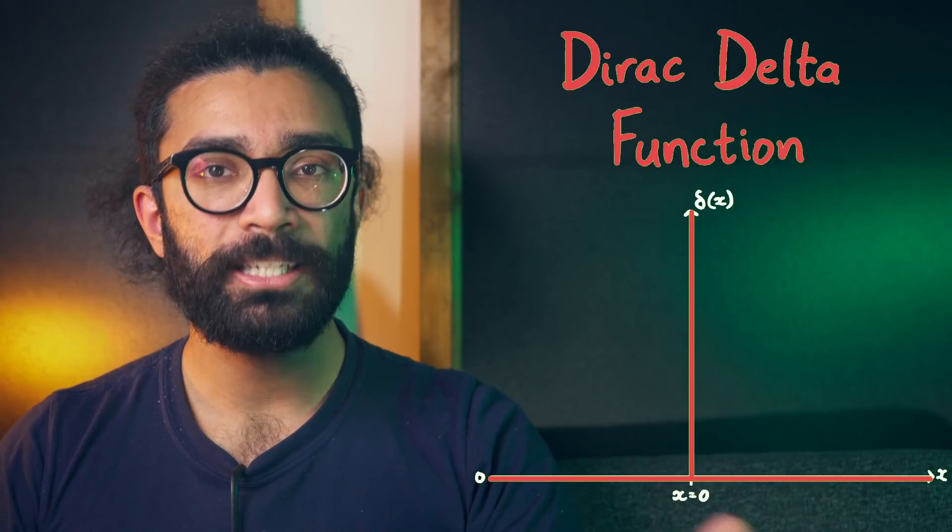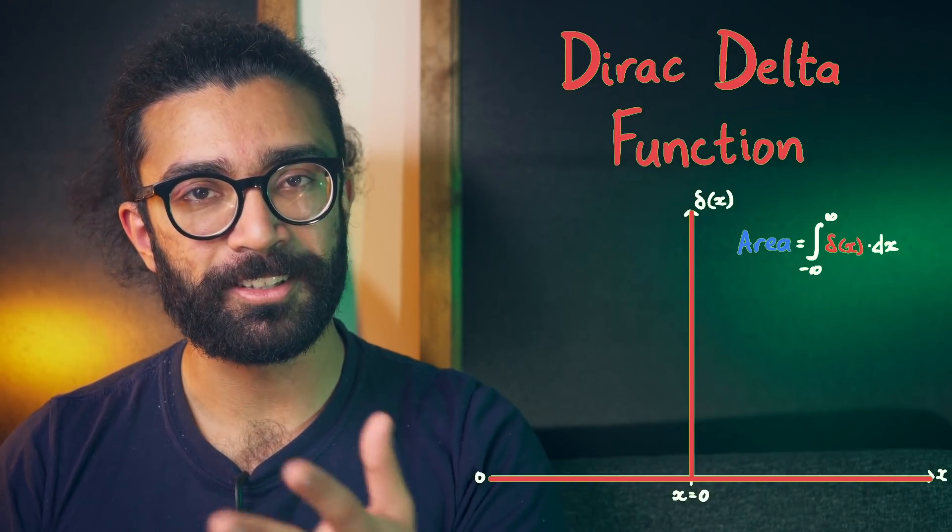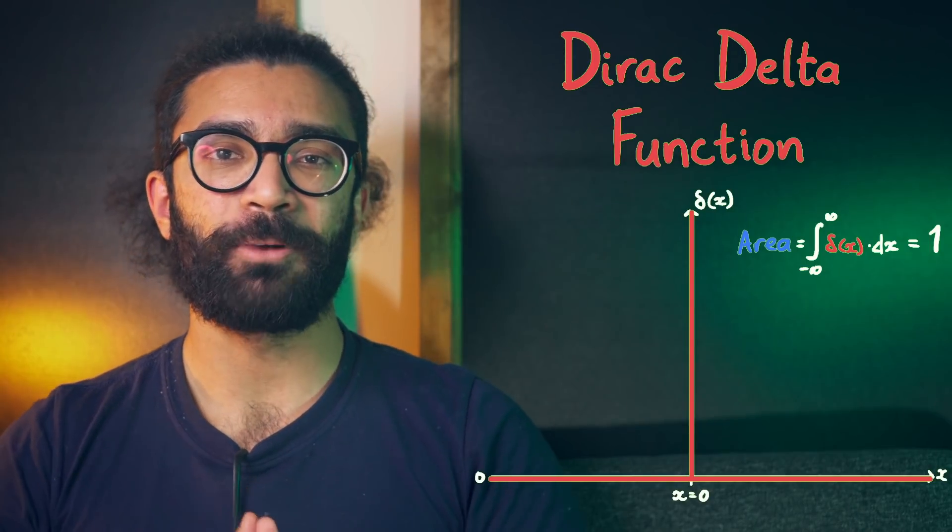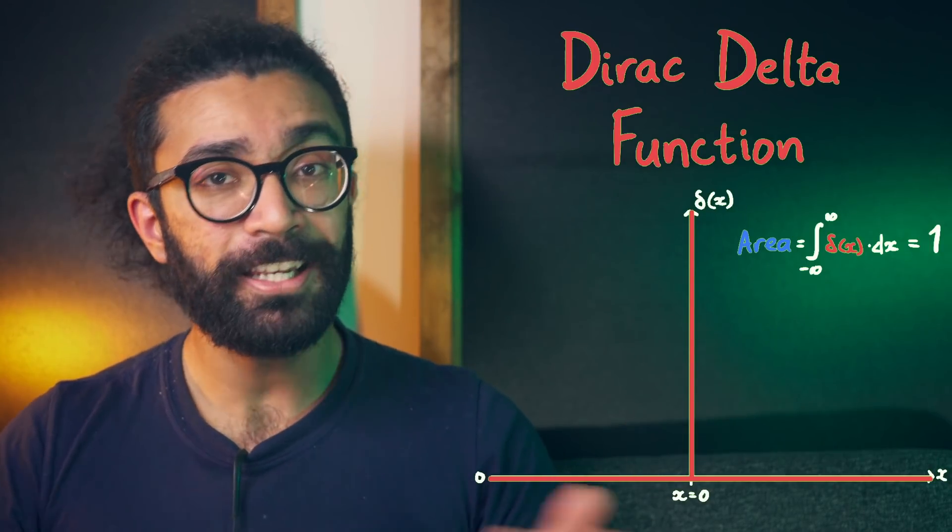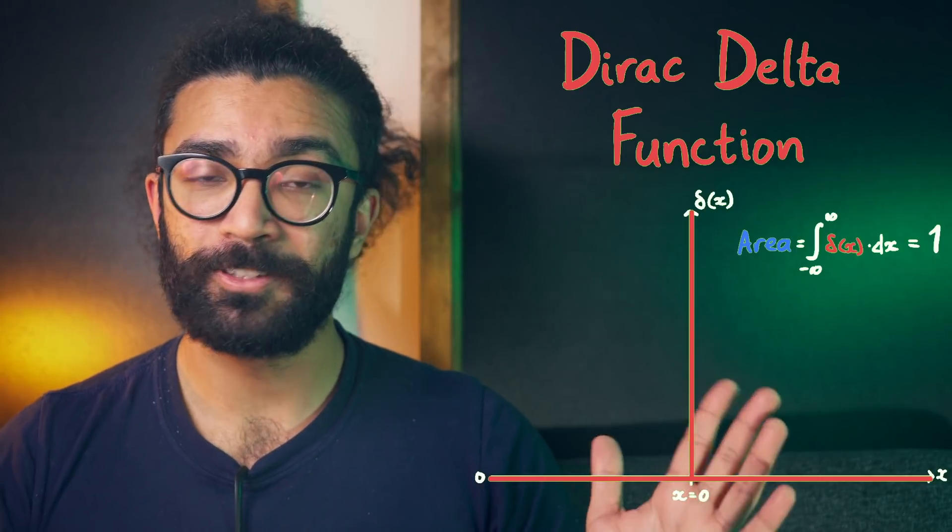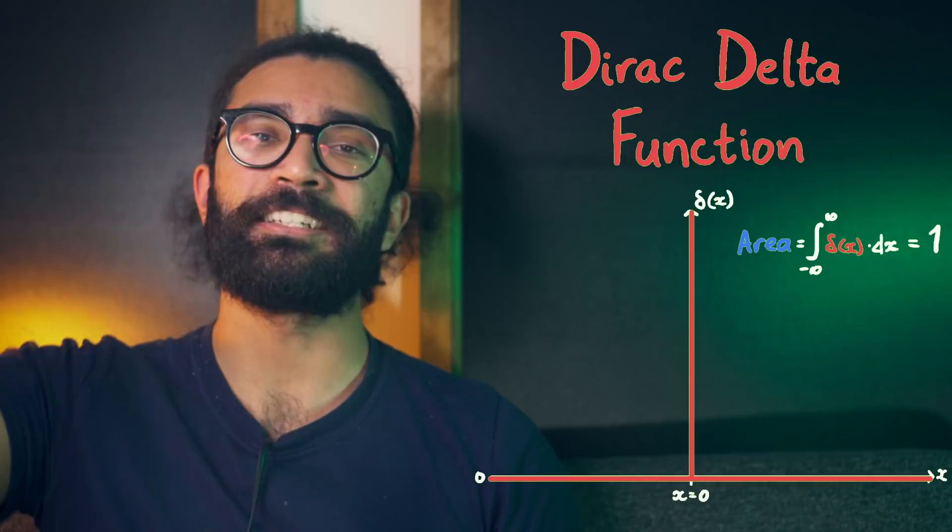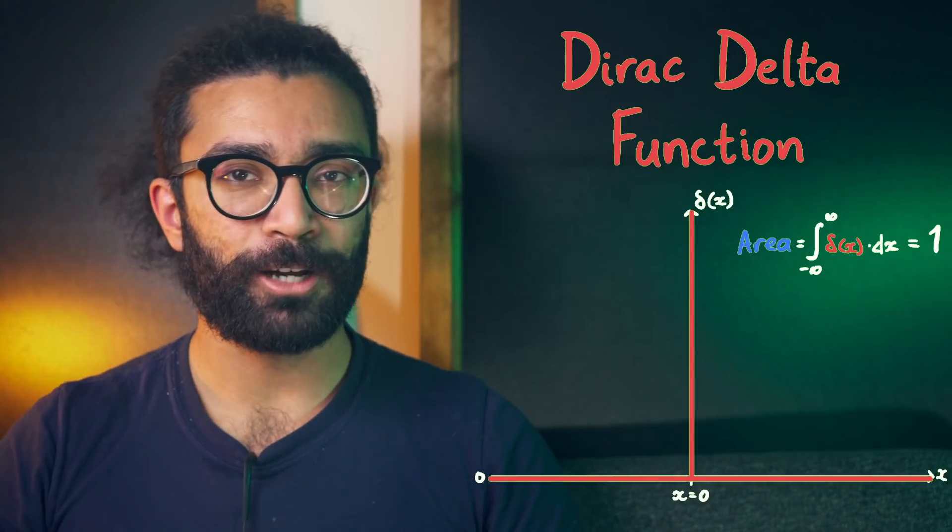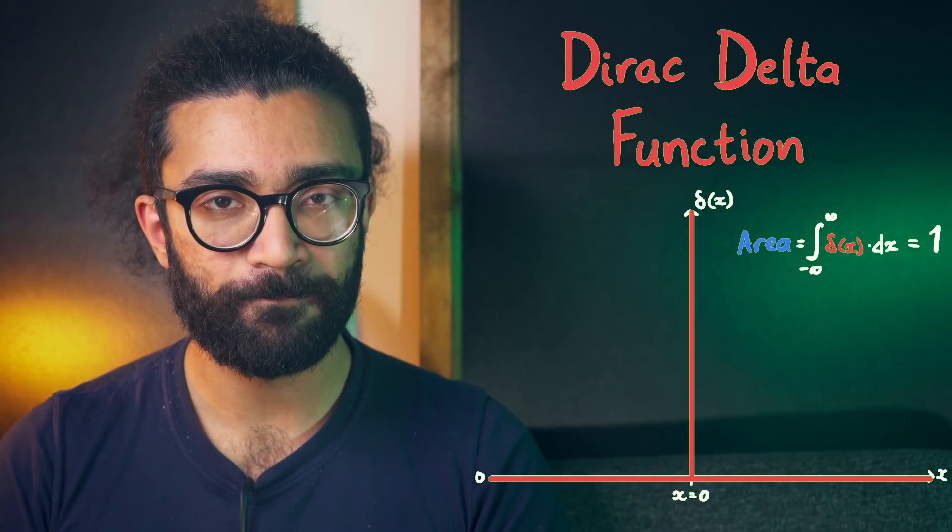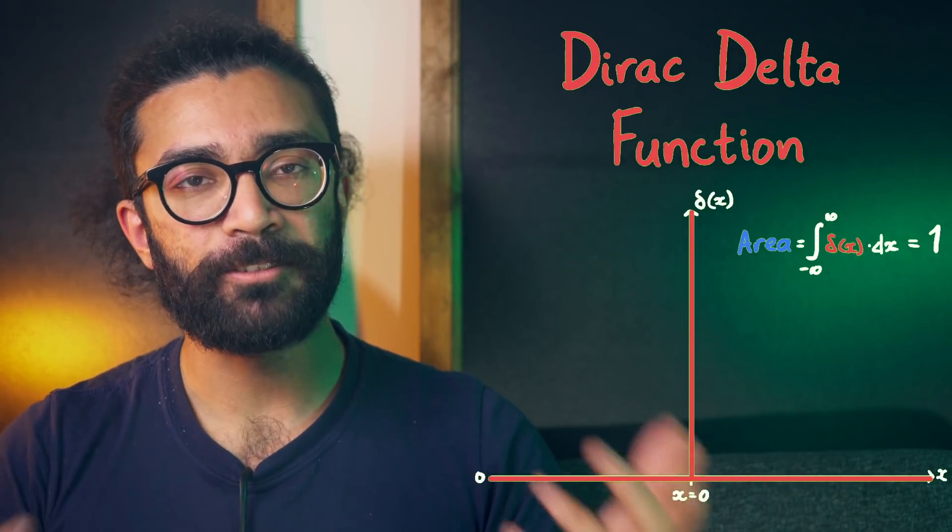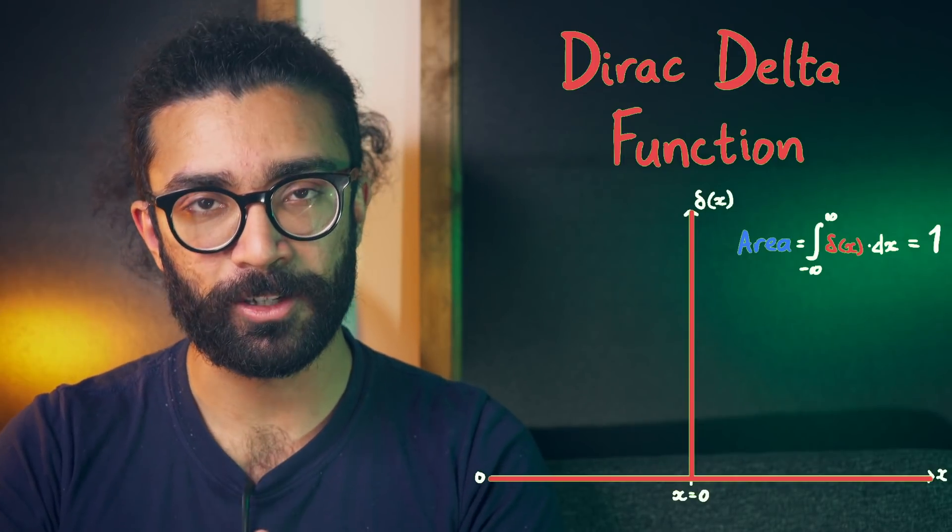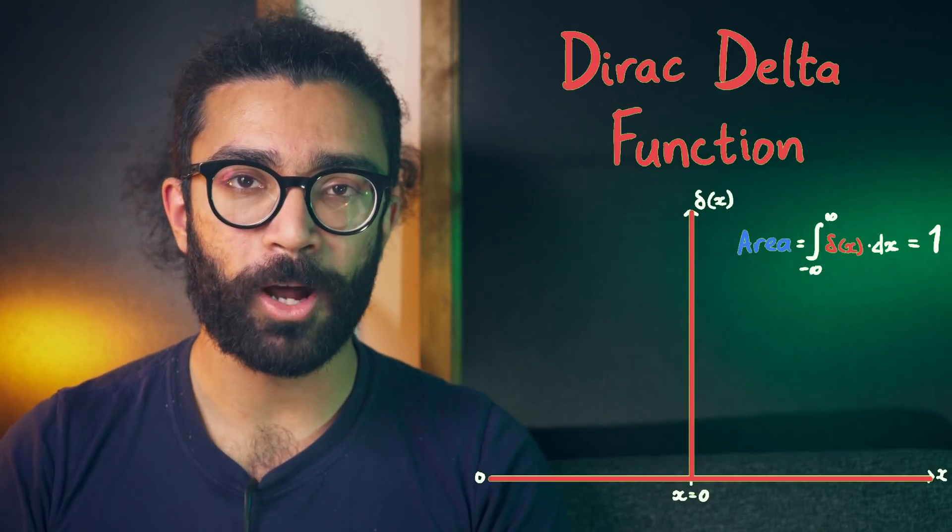Now, the delta function is specially defined so that the area under this graph is equal to one. This is very strange to think about, considering that there's no area under the graph anywhere except for at x equals zero. The width of this function is zero and the height is infinite, and yet somehow the area under this function ends up being finite, with an exact value of one. If you want to find out more about this, then I'll leave some resources in the description, but this is a property of the Dirac delta function. The area underneath the function is equal to one.